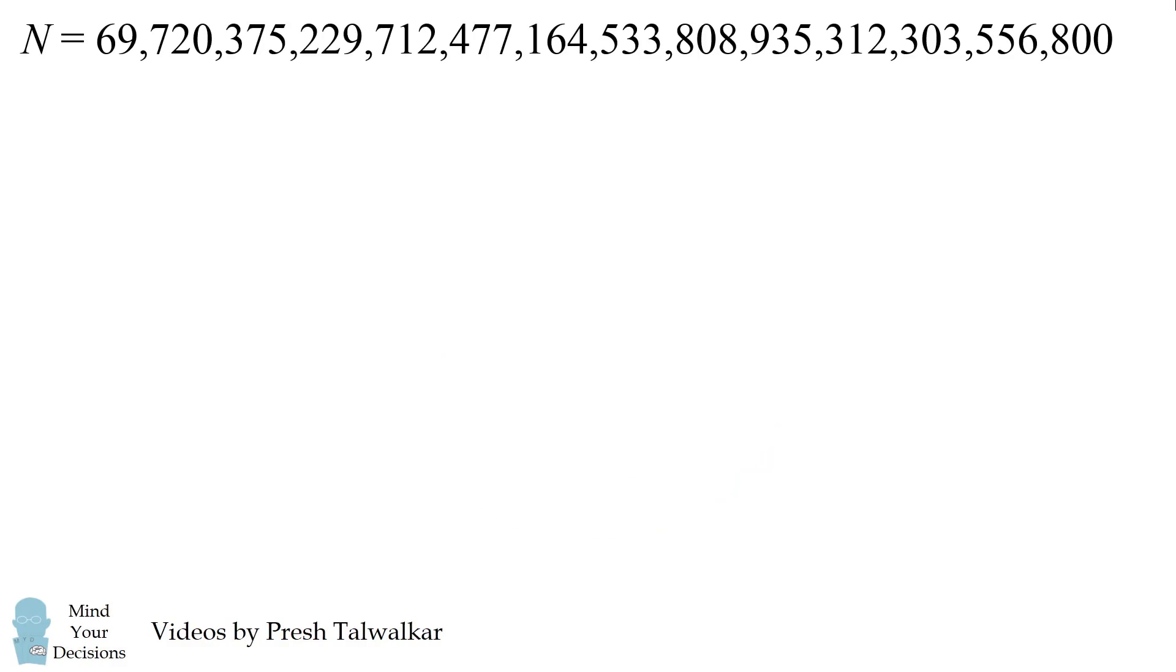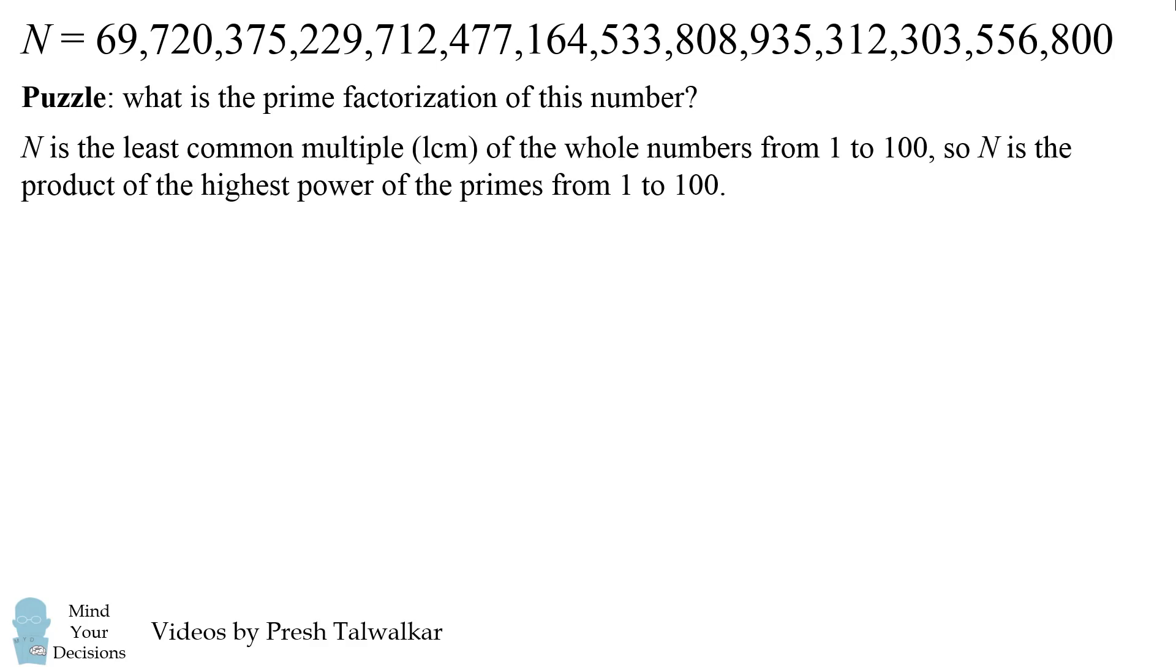In general, finding the prime factorization of a large number is a computationally difficult problem, so we're going to solve the problem using elementary number theory. The number N is the least common multiple (LCM) of all the whole numbers from 1 to 100. So N is the product of the highest power of the primes from 1 to 100. This ensures that every single number from 1 to 100, whatever its prime factorization is, all of those prime factors will be included in N.